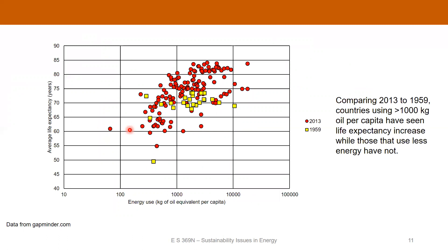What if we look at how this has changed over the years? We have data going back to 1959, though there are fewer data points then — a lot biased towards Western European nations plus South Korea, Japan, and a few others. Overall, life expectancy for most of these countries has increased since 1959. Most interesting is that the increase is most significant for the high energy users. So higher energy use appears to be correlated not just with higher life expectancy now, but a more pronounced increase in life expectancy over the second half of the 20th century.